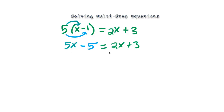Looking at the right-hand side, we have the 2x, and on the left-hand side we have the 5x. So what I'm going to do is bring this 2x to the left-hand side — that way I don't have to deal with the negative numbers. I'm going to subtract 2x on both sides.